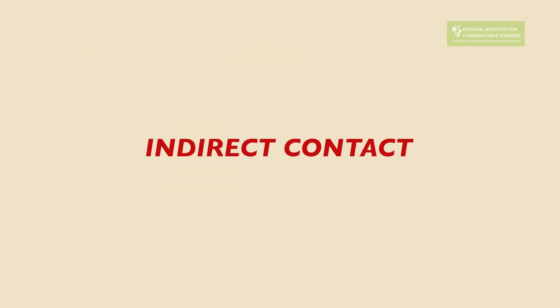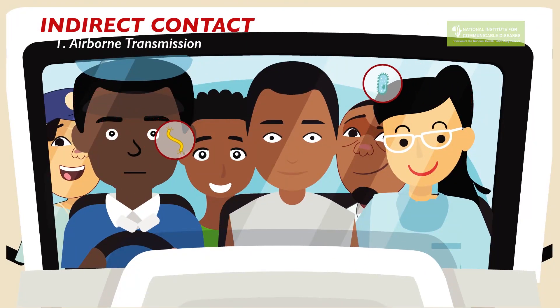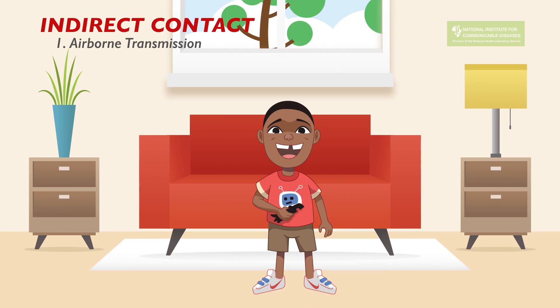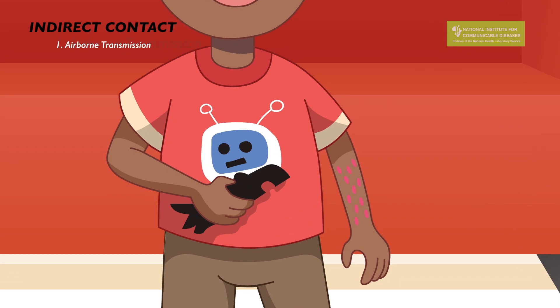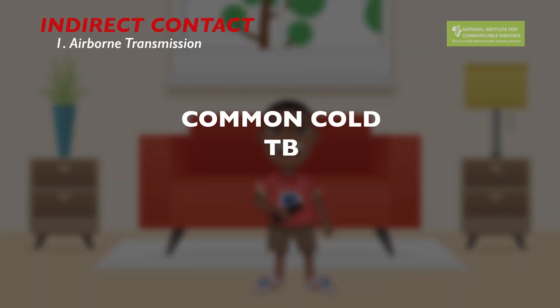Infectious diseases can also be spread indirectly through the air and other mechanisms. For example, airborne transmission: some infectious agents can travel long distances and remain suspended in the air for an extended period of time. You can catch some diseases simply by breathing — these are called airborne diseases. You can catch a disease like measles by entering a room after someone with measles has departed. Other diseases that spread through the air are the common cold, TB, chicken pox, and mumps.